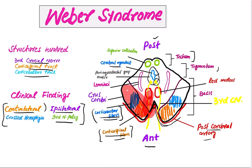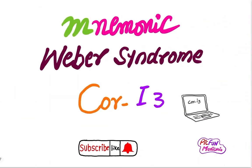Due to involvement of the corticospinal fibers, there will be paralysis of the upper and lower limb on the contralateral side. So on the ipsilateral side there will be third cranial nerve findings, and on the contralateral side there will be findings of corticobulbar and corticospinal fiber involvement.